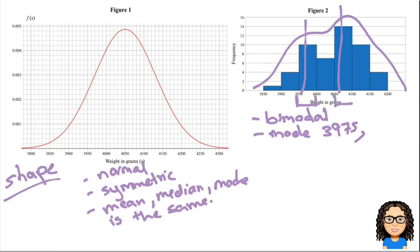Halfway between, that would give me one mode at about 3,975. And the other one, I would have a mode halfway between 4,050 and 4,100. So that would be 4,075 grams. So there would be our two modes.